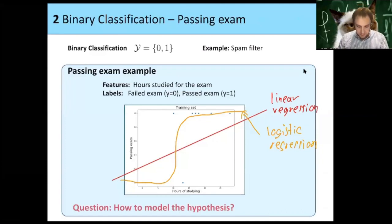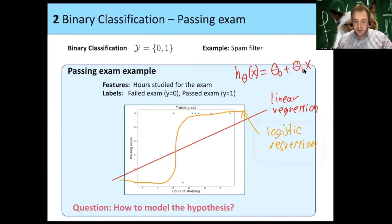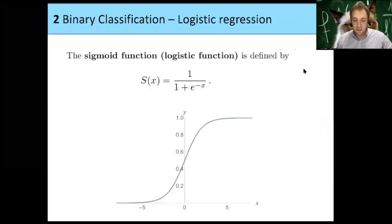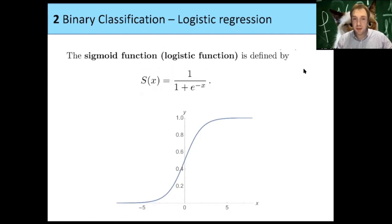For the linear regression, we had h_theta of x equals theta_0 plus theta_1 times x. For logistic regression, we introduce the so-called sigmoid function or logistic function, which we denote by capital S. This is given as 1 over (1 plus e to the minus x).